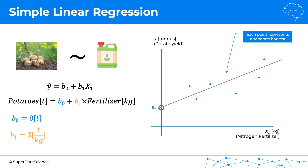The slope coefficient means that if you increase the amount of nitrogen fertilizer by one kilogram, then the amount of potato output will increase by three tons. Of course, these numbers are made up for illustrative purposes. That's how simple linear regression works — look forward to seeing you next time. Until then, enjoy machine learning!